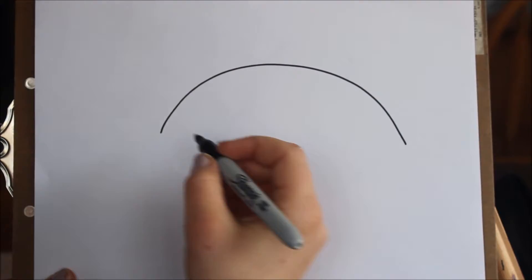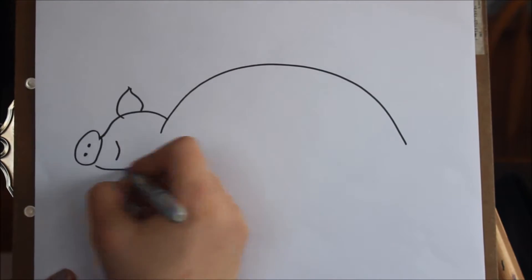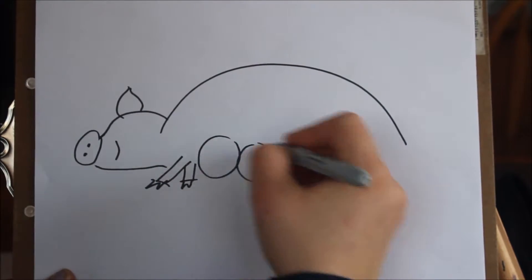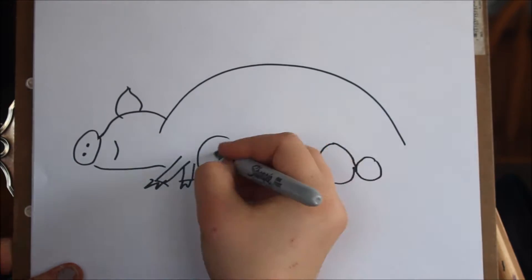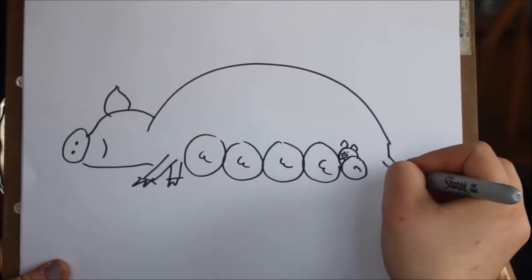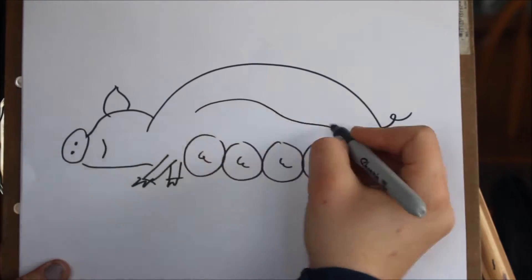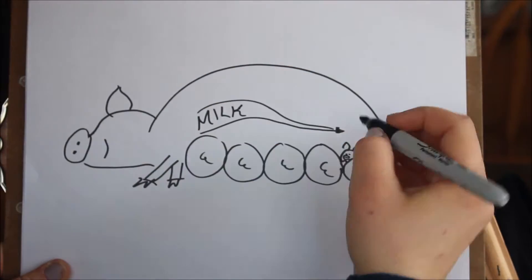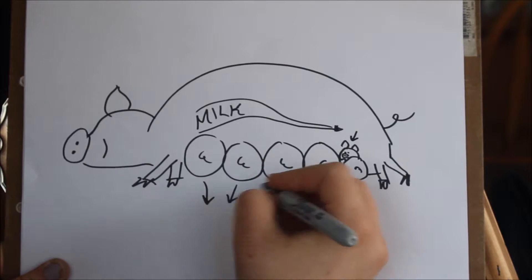Piglets come out in their birth order, with larger, more dominant piglets coming out first and smaller ones later. The big piglets secure the front teats, which supply the most milk because of the natural flow of milk, while the little guys typically get the rear teats, which supply the least amount of milk or are not functional at all.